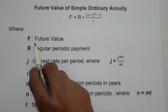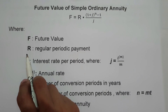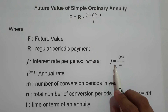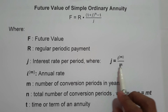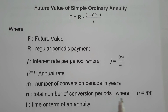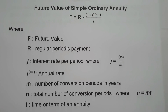Where F is the future value; R is the regular periodic payment; j is the interest rate per conversion period, found using i raised to m over m, where i raised to m is the annual rate and m is the number of conversion periods in a year; and n is the total number of conversion periods, where n equals m times t, and t is the time or term of the annuity. This is the formula we need to remember to solve for the future value of simple ordinary annuity.